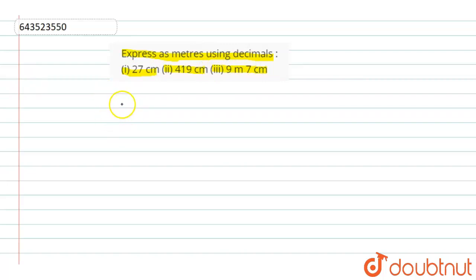Let's move towards question number first, 27 cm. As we all know that 100 cm is equal to 1 m. So from here, 1 cm is equal to 1 by 100 m.